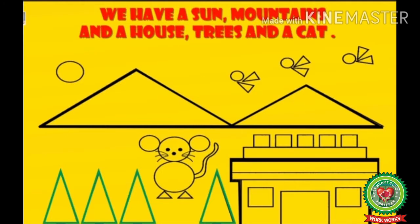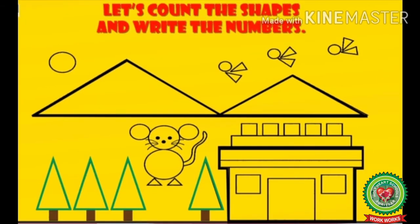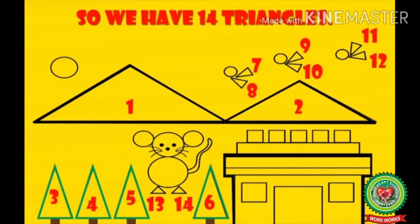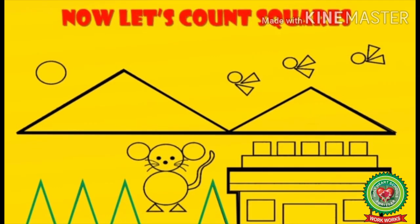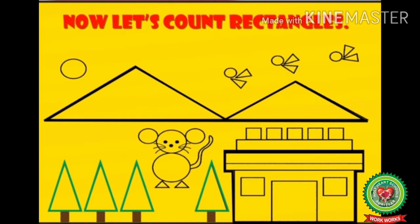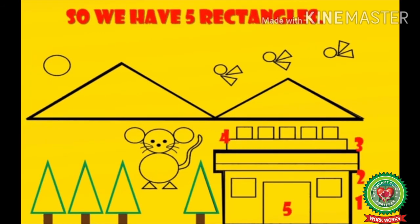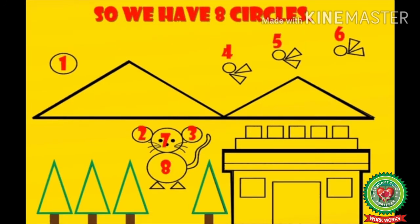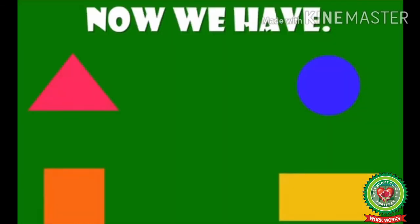Let me explain this with some examples. In this picture you can see a sun, mountains, a house, trees, and a cat. First we will count the shapes and write the numbers. We will count the triangles — there are 14 triangles. Then we will count the number of squares — there are seven squares. Now we will count the number of rectangles — there are five rectangles. And we will count the number of circles — there are eight circles.